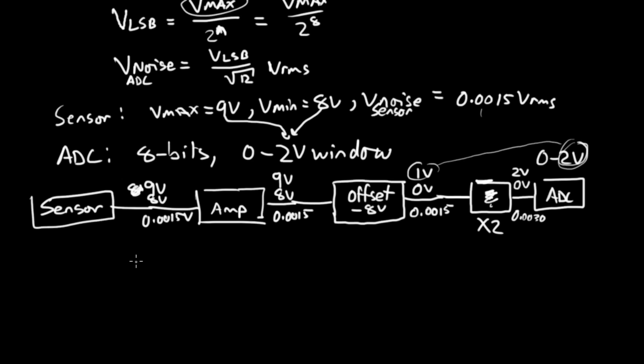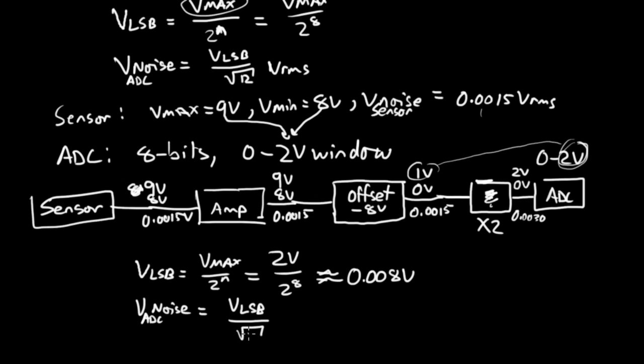Let's run the numbers. VLSB for the ADC equals VMAX divided by 2 to the N, which is 2 volts divided by 2 to the 8th, which is approximately equal to 0.008 volts. What about our quantization noise? The ADC noise equals VLSB divided by root 12, and that's about equal to 0.0023 volts RMS. Now, this voltage, the quantization noise, we want to be less than our sensor noise so that we can encode the sensor noise. And indeed it is. This 0.0023 is less than this 0.0030.